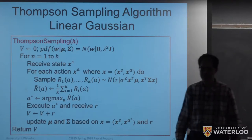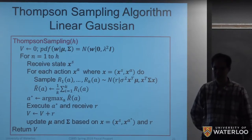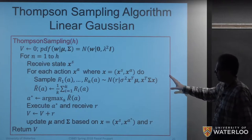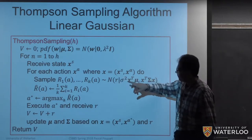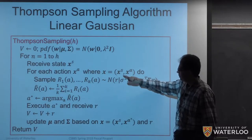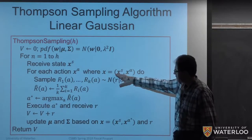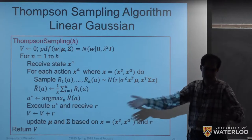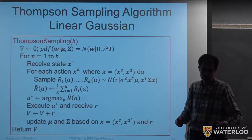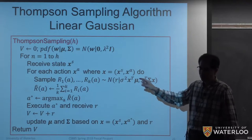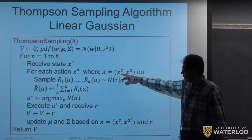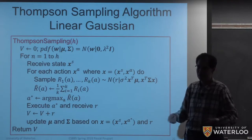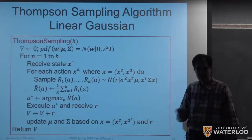A student asks about discrete states. The instructor explains: nothing changes — the feature vector xs for the state description can consist entirely of discrete or Boolean features, which is actually common in social media applications where feature vectors are often discretized or Boolean.